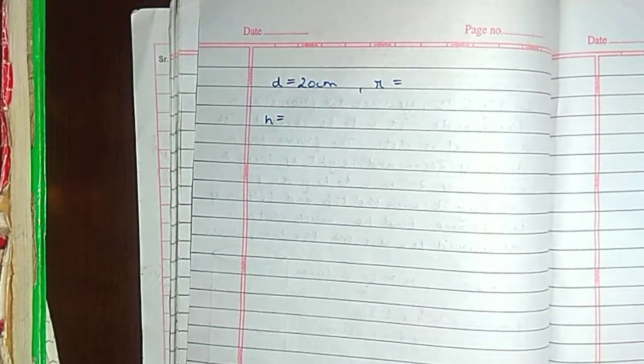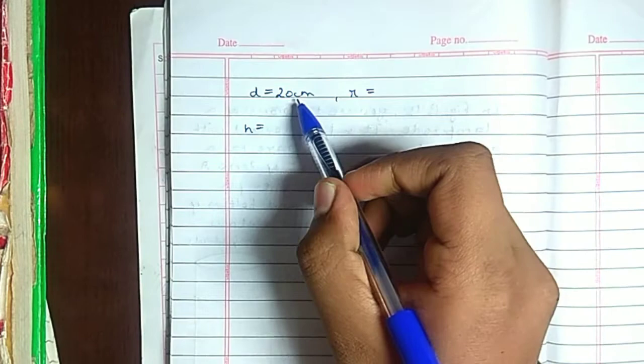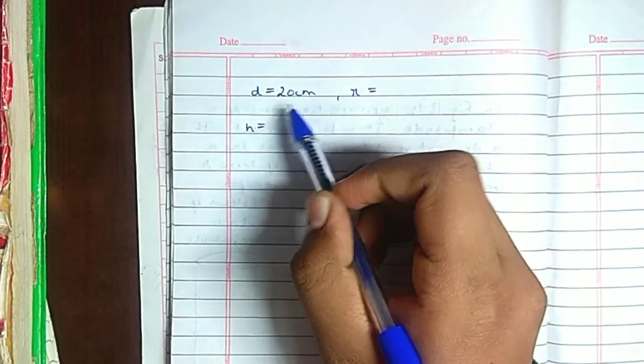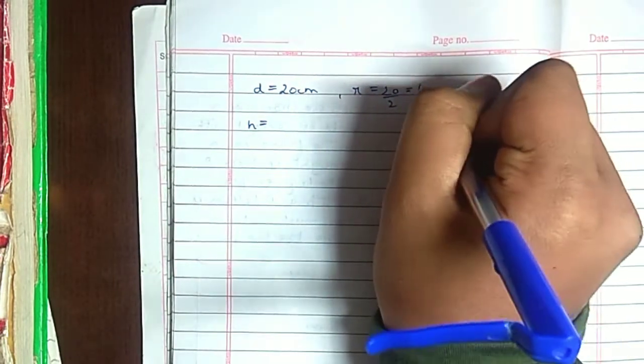In question, we find the base of the lampshade is 20 cm. Where we have the base of the lampshade, there is a diameter. Now the diameter is 20, so the radius we have is 20 divided by 2. It is equal to 10 cm.